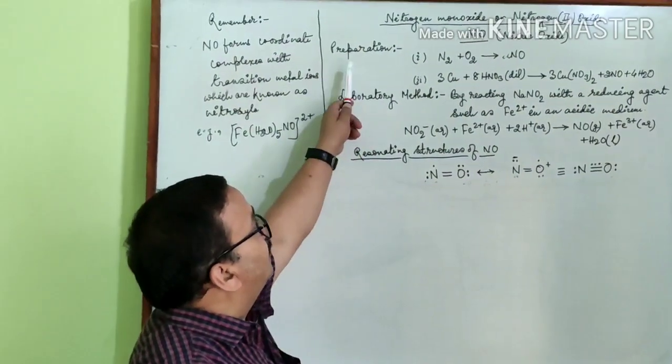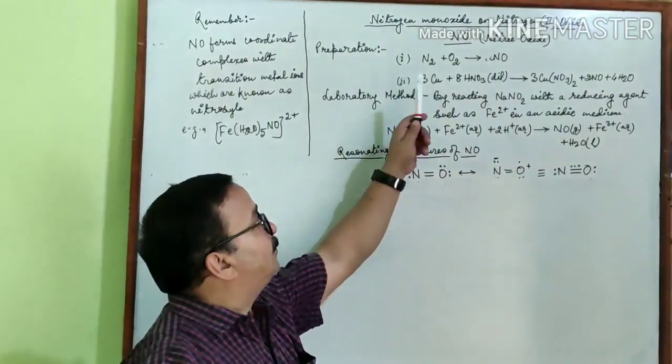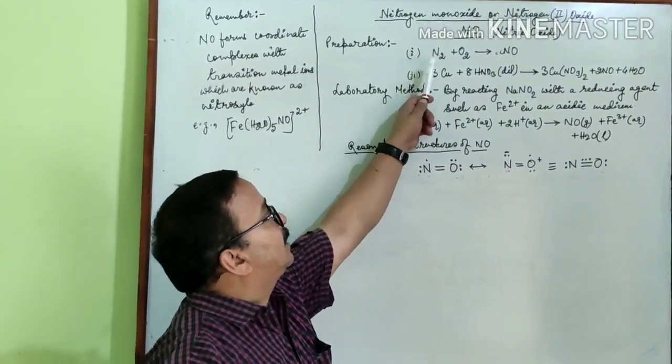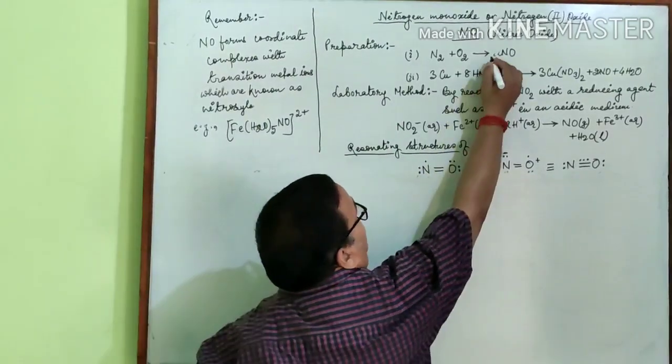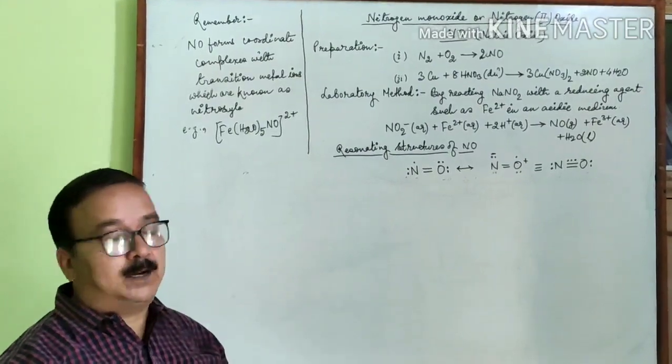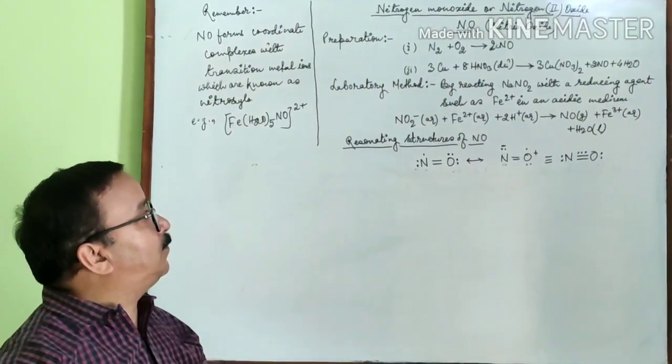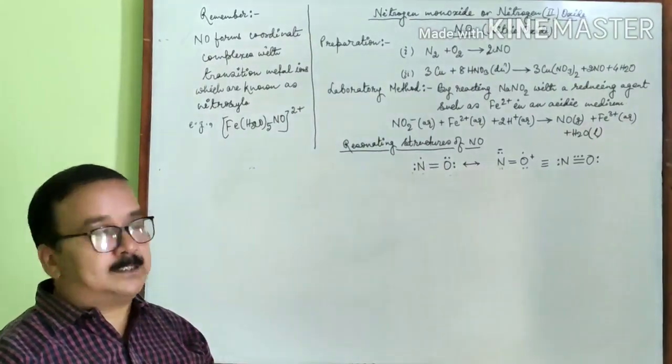Now how can nitrogen monoxide be prepared? Different methods are there. First method is, it can be prepared by the combination of nitrogen and oxygen. When nitrogen and oxygen combine together they form NO. It is also known as nitric oxide.